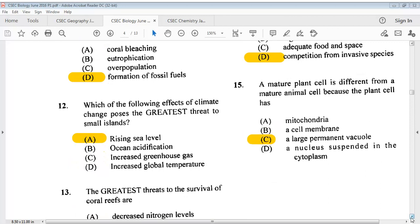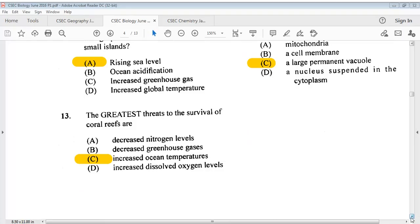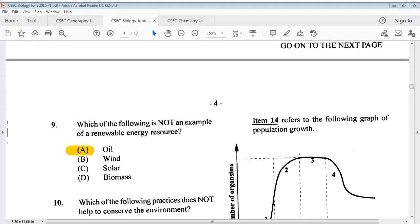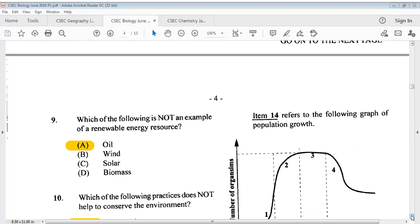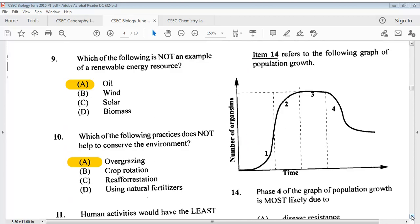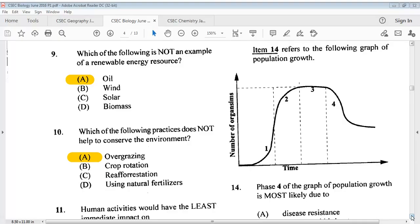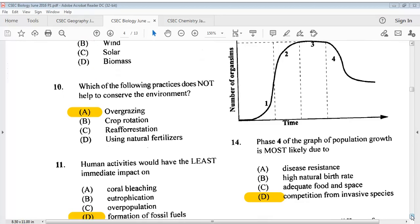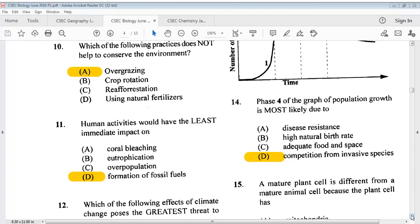Question 12, which of the following effects of climate change poses the greatest threat to small islands? The answer is A, rising sea levels. Question 13, the greatest threats to the survival of coral reefs are? The answer is C, increased ocean temperatures. For number 14, we have a graph of population growth. Question 14 says phase 4 of the graph of population growth is most likely due to? The answer is D, competition from invasive species.